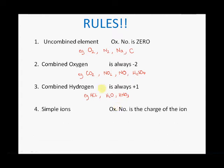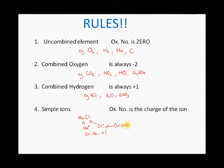Rule four: for simple ions, the oxidation number will be equal to the charge of the ion. So in sodium chloride, the sodium is Na⁺, and the oxidation number will be plus one. Notice the oxidation number is written the other way around to the charge — you say one plus for the charge, but plus one for the oxidation number. Similarly, chlorine has a one negative charge, so its oxidation number is minus one.